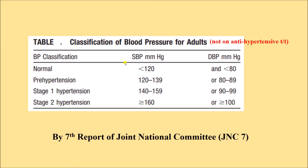Sometimes we loosely say normal blood pressure is 120 over 80, but it is not so — normal is less than 120 systolic and less than 80 diastolic. Pre-hypertension is systolic 120 to 139 and diastolic 80 to 89, so 120 over 80 is actually pre-hypertension. Systolic 140 and above or diastolic 90 and above is hypertension — either stage one (systolic 140–159 or diastolic 90–99) or stage two (systolic 160 and above or diastolic 100 and above).